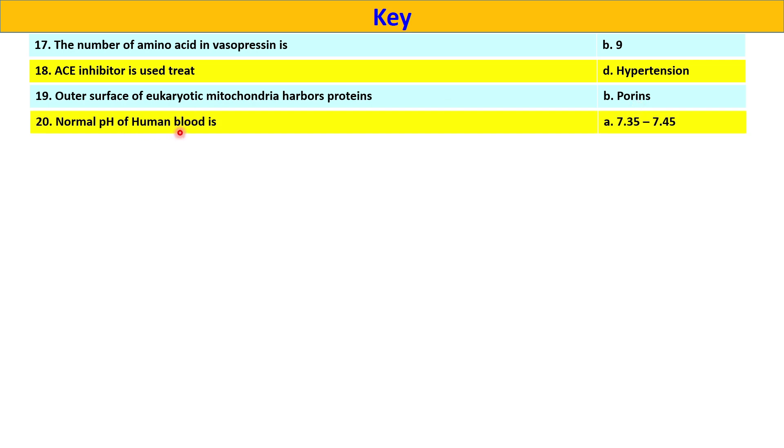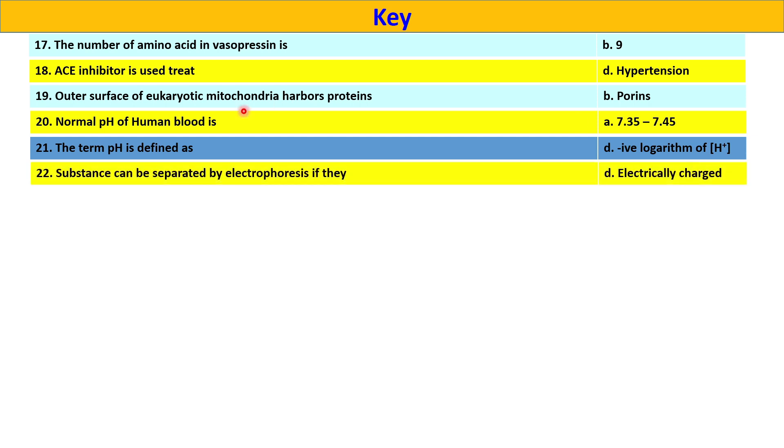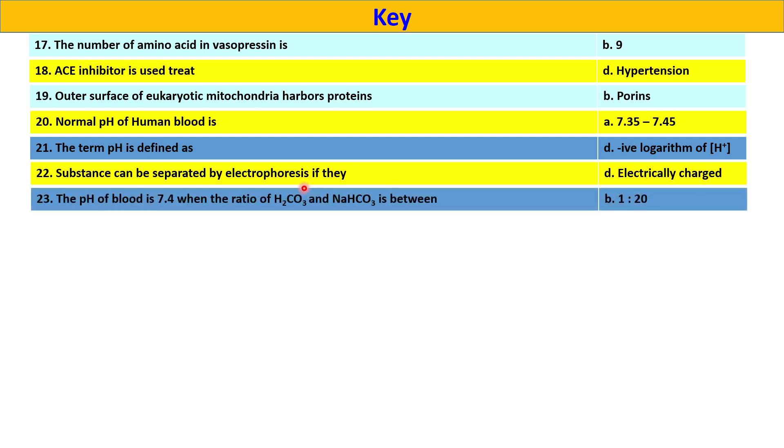Normal pH of human blood is option A, 7.35 to 7.45. The term pH is defined as option D, negative logarithm of hydrogen ion concentration. Substances can be separated by electrophoresis if they, option D, are electrically charged. The pH of blood is 7.4 when the ratio between bicarbonate and sodium bicarbonate is 1 to 20.